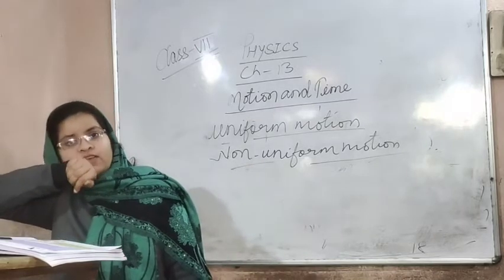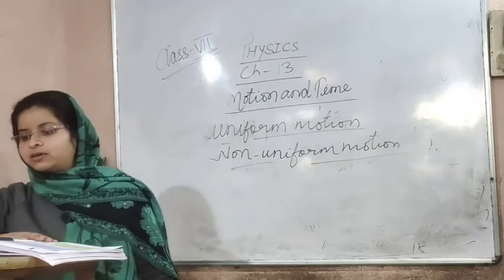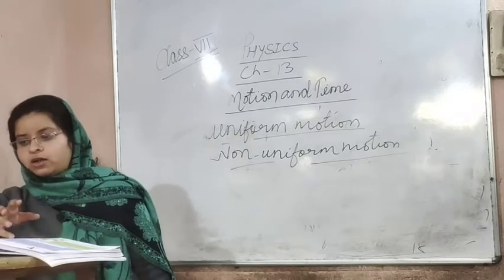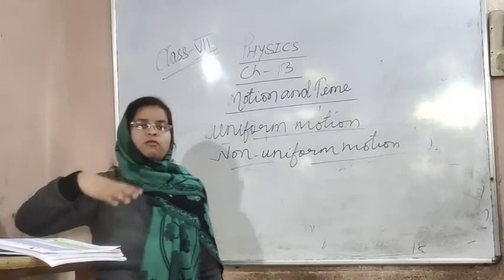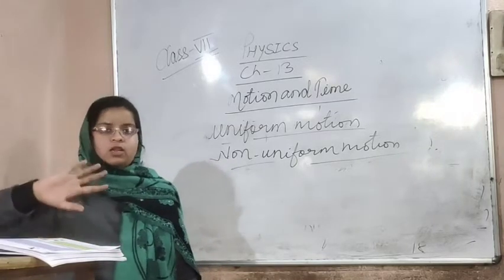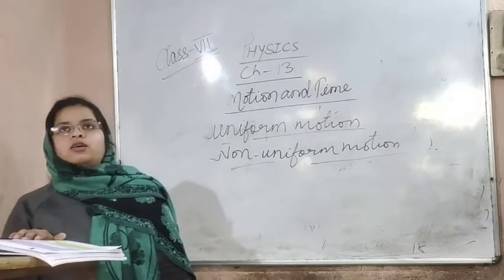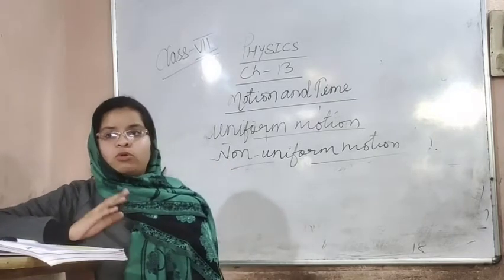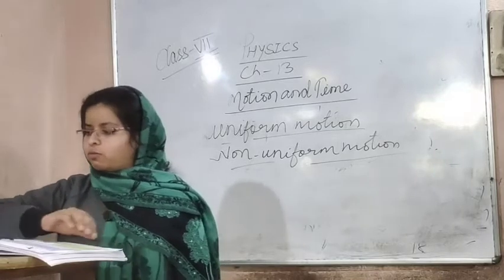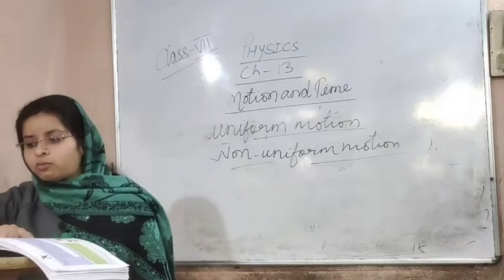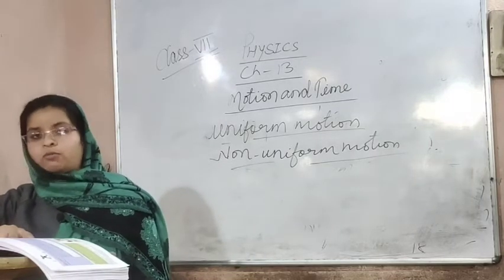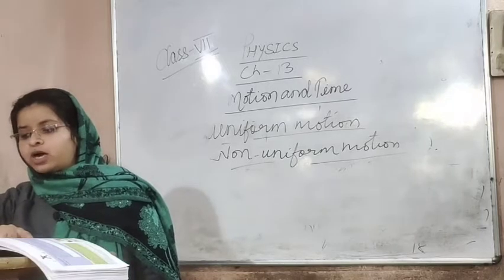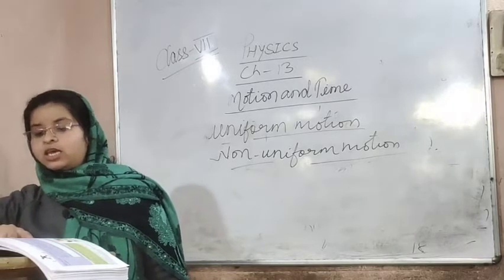If your car's speed is constant and covers a particular distance in a unit interval of time throughout the traveling, and the time changes uniformly, there is your uniform motion. Motion is said to be uniform when a body travels equal distance in equal interval of time.